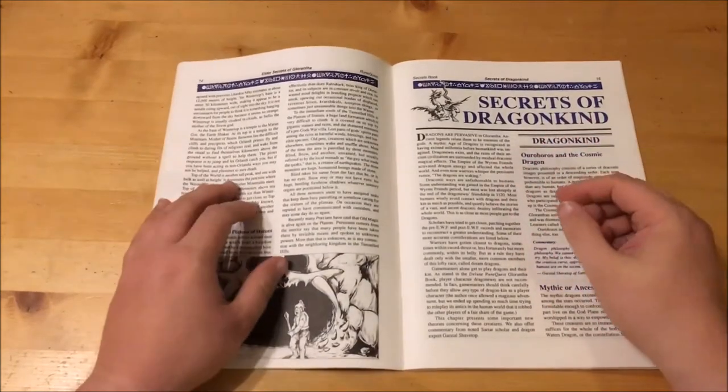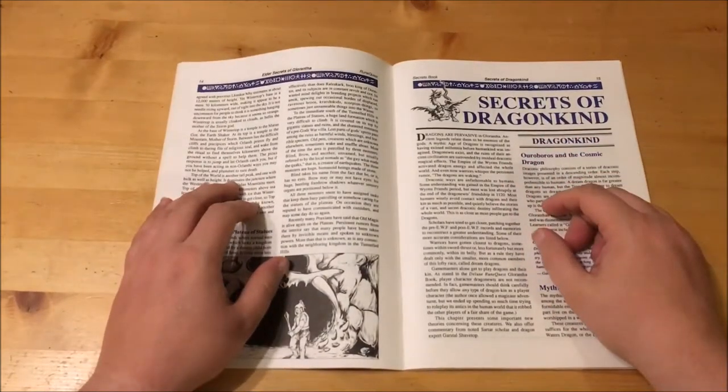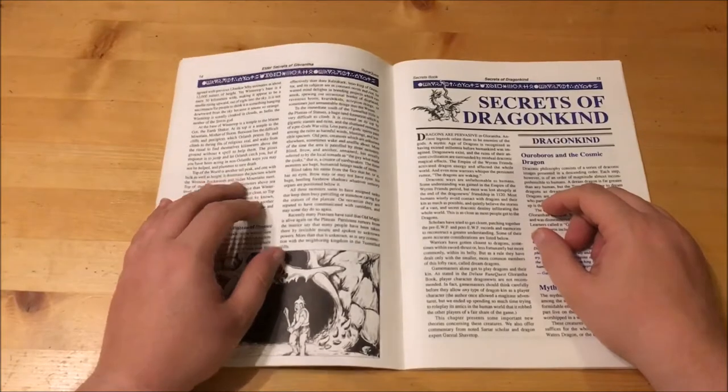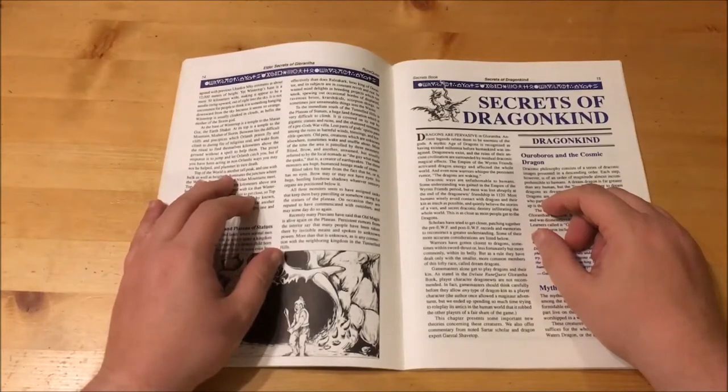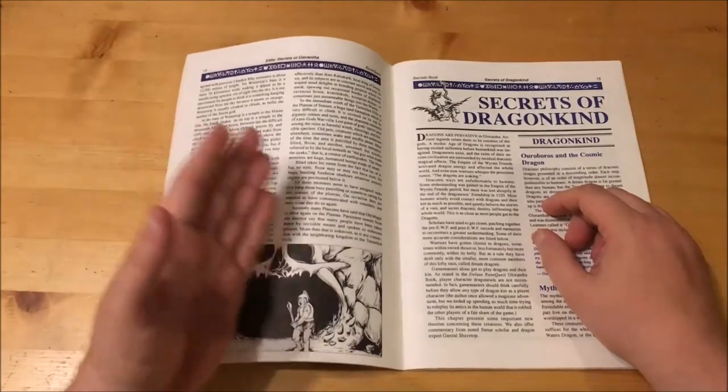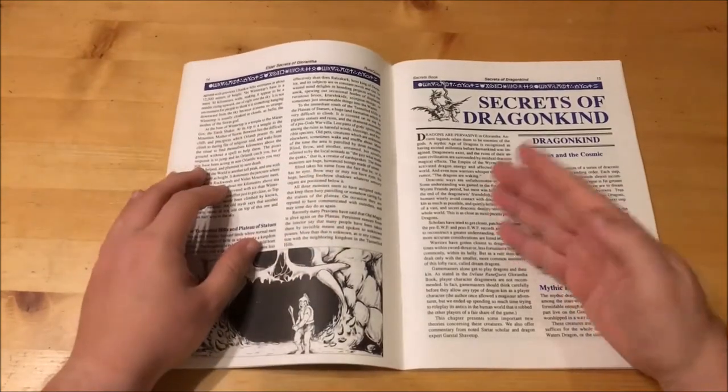Two of them are fairly normal mountains, Vent and Storm War. Wintertop however, is an oddity. It is a mountain that is 12,000 meters tall and only 30 kilometers wide which makes it look like a needle that rises to the sky. Top of the world is a tall peak that has never been conquered by any reputable mortal and indeed another mountain is said to sit atop it reaching into the sky. Lastly we have the Tunnelled Hills and the Plateau of Statues, a kingdom ruled by a demon child of Cacodemon. The Plateau of Statues is a difficult to climb land formation covered at the top by gigantic statues and ruins. It's patrolled by three creatures: Blind, Brow and another unnamed one. They are huge and made of stone and act as caretakers to the plateau.